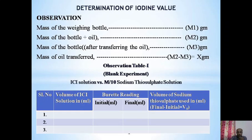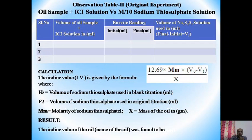For the second observation table — the original experiment — we take oil plus ICl solution. This solution contains one or two drops of starch solution as indicator, and it is titrated against M/10 sodium thiosulphate solution. The volume of the oil sample plus ICl solution is taken in a conical flask and titrated against M/10 sodium thiosulphate kept in a burette.